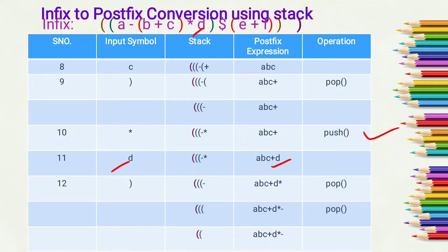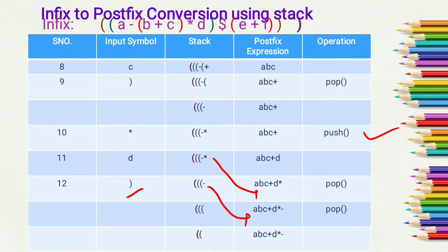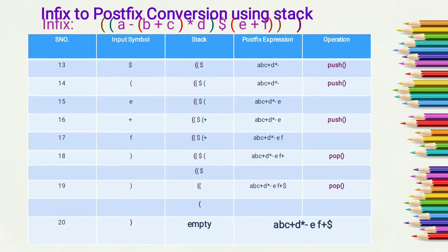The next input symbol is 'D', which is an operand, so we add it into the postfix expression. Next is a closing bracket. When the closing bracket comes, we pop operators one by one until we get an open bracket. First we pop multiplication and add it to the postfix expression, then we pop minus and add it to the postfix expression. One open bracket is cancelled with this closing bracket, leaving two open brackets remaining in the stack.